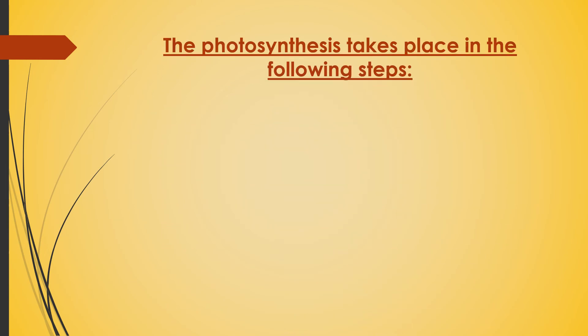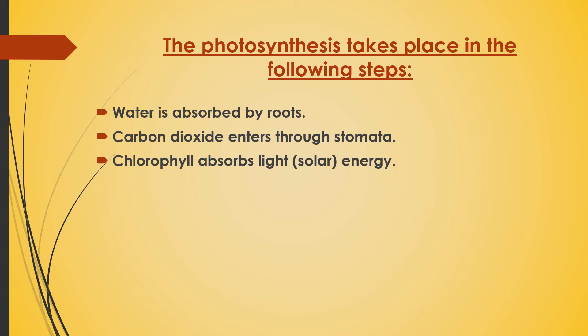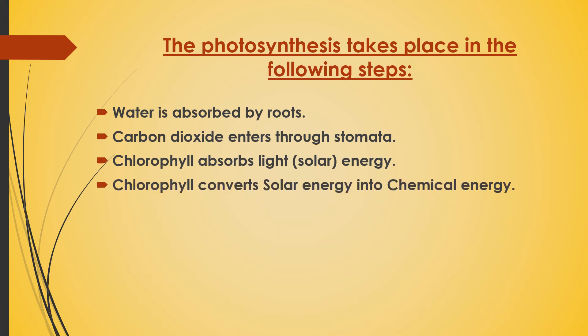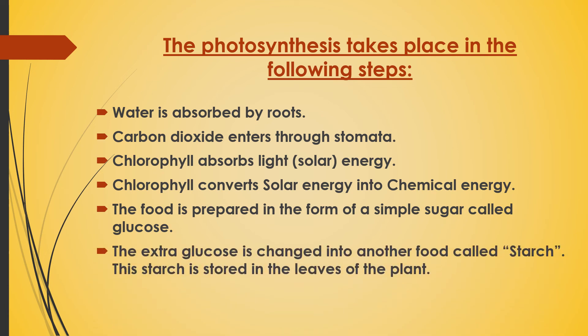Photosynthesis takes place in the following steps: 1. Water is absorbed by the roots from the soil. 2. Carbon dioxide enters through stomata from the atmosphere. 3. Chlorophyll absorbs light or solar energy from the sun. 4. Chlorophyll converts solar energy into chemical energy with the help of carbon dioxide and water. The food is prepared in the form of a simple sugar called glucose. The extra glucose is changed into starch, which is stored in the leaves of the plant. In other words, carbon dioxide and water get converted into glucose and oxygen by chlorophyll in the presence of sunlight — this is photosynthesis.